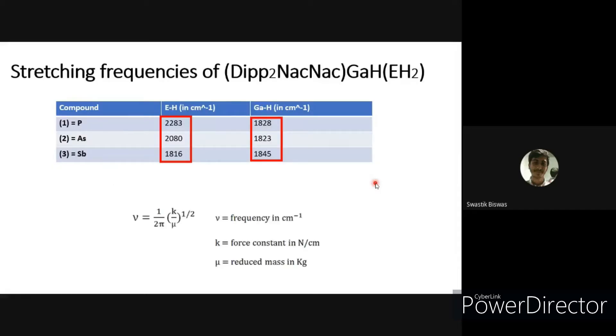In this table, it shows the IR stretching frequency of Dipp nacnac gallium pnictogenides. As you can see, the stretching frequency of gallium-H is nearly constant while the nitrogen-H bond decreases down the group, which is in accordance to the formula given below.